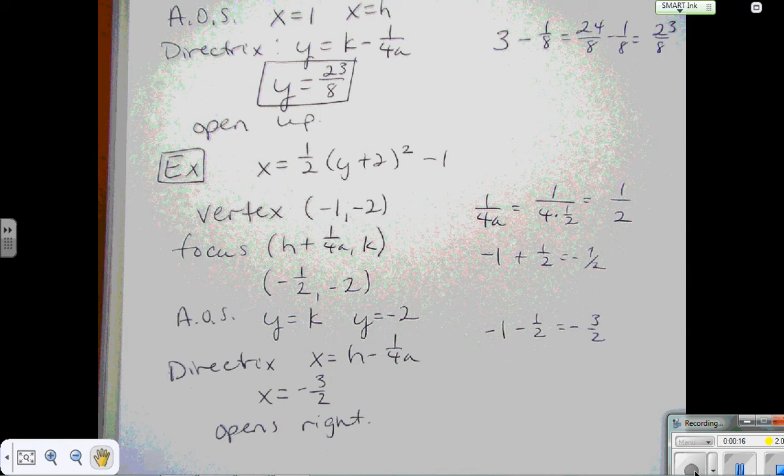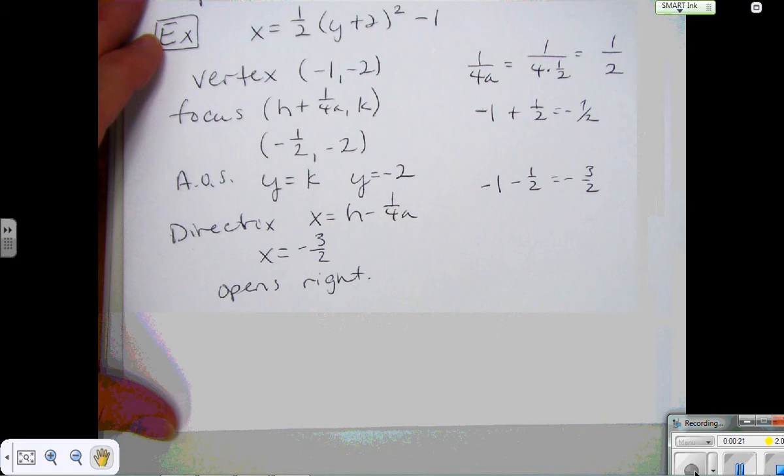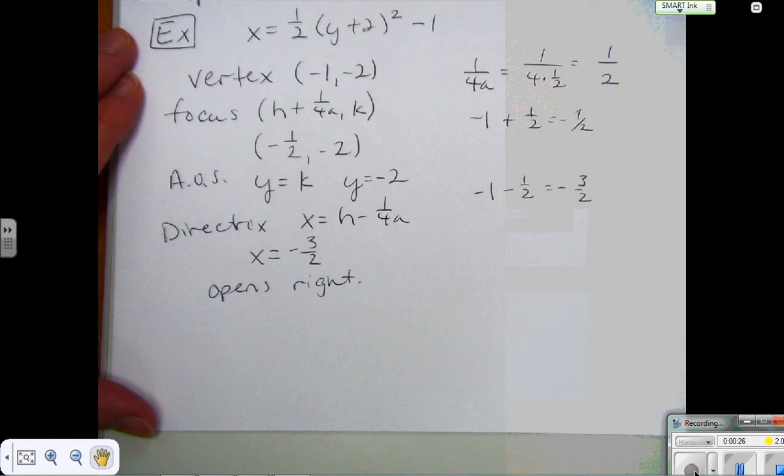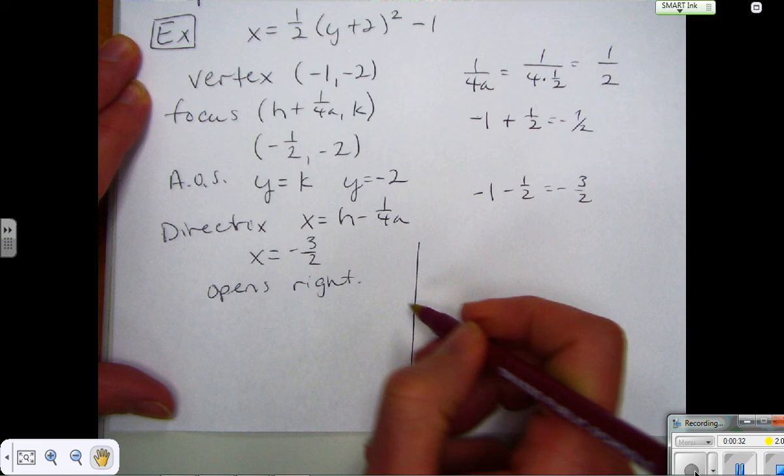So let's graph this one real quick. You are going to have to do some graphing today. There are graphs already on your paper, so you're not going to need graph paper. But since my vertex is at negative 1, negative 2, I'm going to make my graph a little bit bigger in the fourth quadrant and a little bit on the first quadrant.